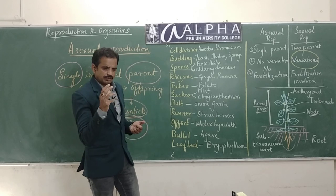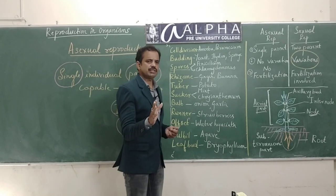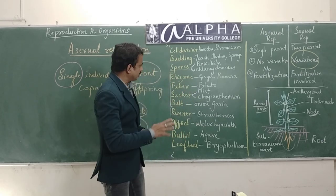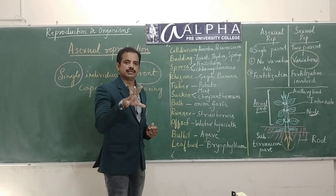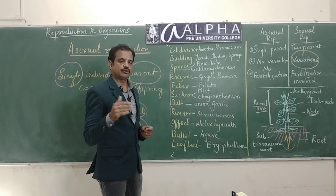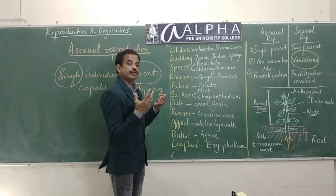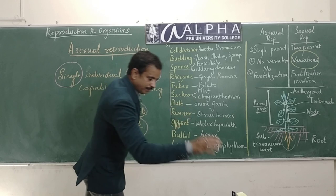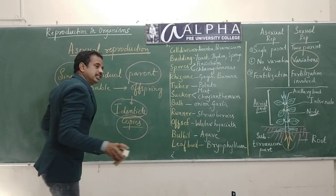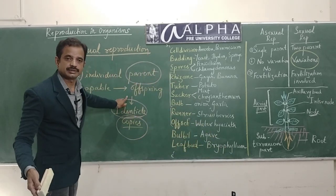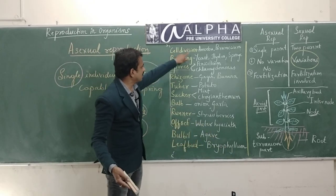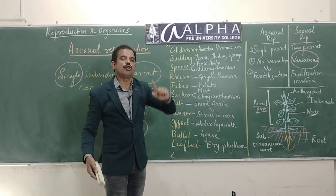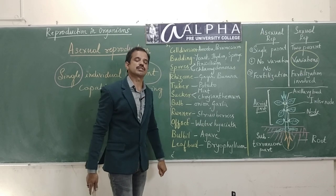Students, you can simply pause the video at this point and go through these examples before listening to me, so that it will be easy to keep this in mind. I will take examples one by one and explain the meaning of the definition of Asexual Reproduction as given in your textbook.